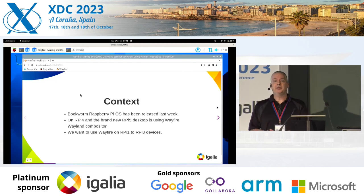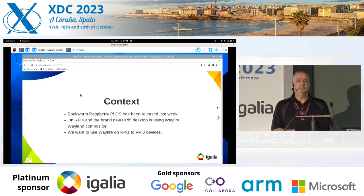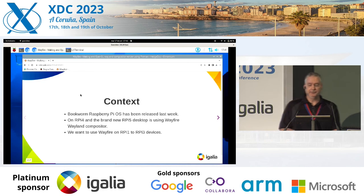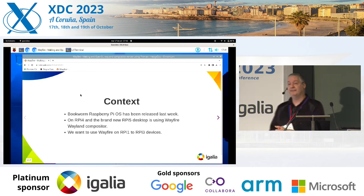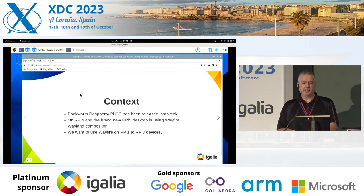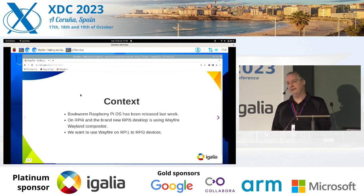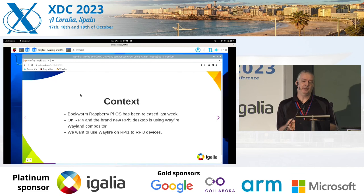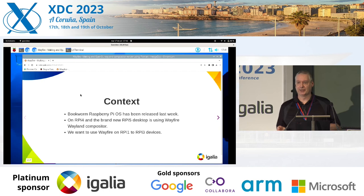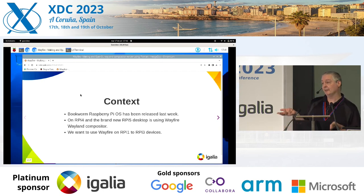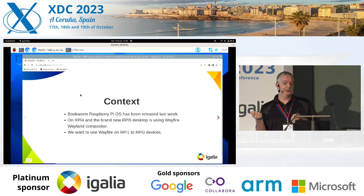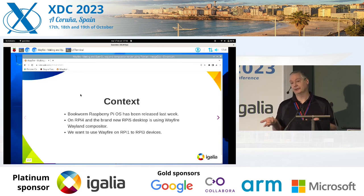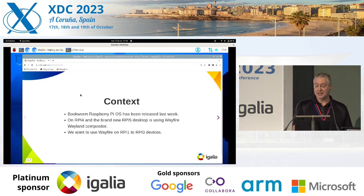As some of us know, the latest Bookworm Raspberry Pi OS was released last week, along with the announcement of the RPI 5 device. The RPI 4 and the RPI 5 will come by default running Wayfire using OpenGL. However, because it's Raspberry Pi OS, we want to have the same experience across all the devices. So we need this Wayfire OpenGL Compositor to run on RPI 1 through 3 also, which obviously we can't do with OpenGL.